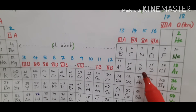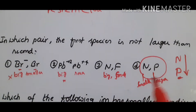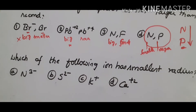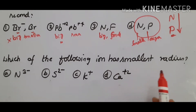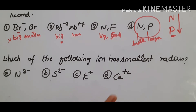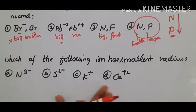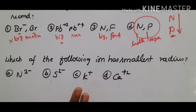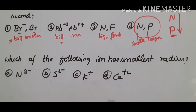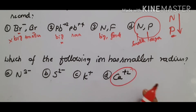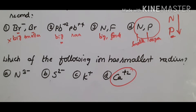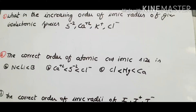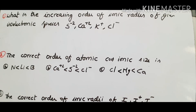Nitrogen is in group 5, second period; phosphorus is in group 5, third period. Going down a group, atomic size increases, so phosphorus is larger than nitrogen. This means nitrogen is smaller here — so nitrogen and phosphorus is the answer where the first species is NOT larger than the second.